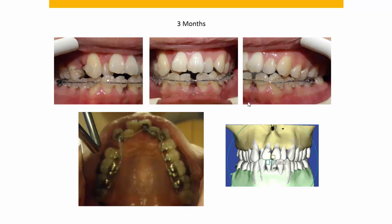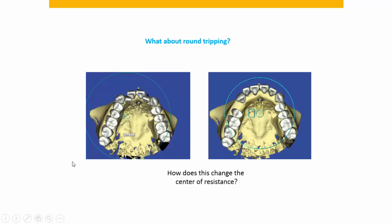So in this case, we extracted the upper right first bicuspid. Here's what it looks like at three months — you can see we're retracting the cuspid to make room for the lateral and central incisor. No bracket was placed on the lateral or central until after room was made, to avoid round tripping. When we talk about round tripping, we flare the teeth out so the wire can be captured in all the slots. I believe we don't know the long-term consequences of round tripping, and if it's possible to avoid it, we should.